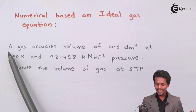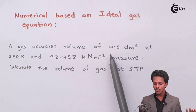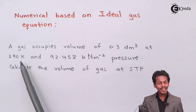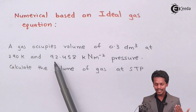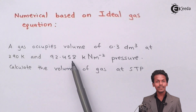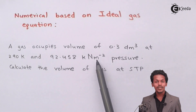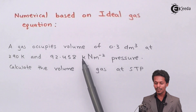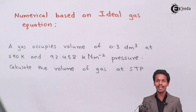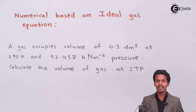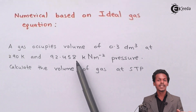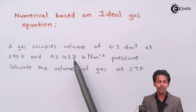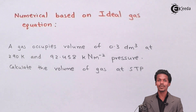It is given that a gas occupies a volume of 0.3 dm³ at 290 Kelvin, and the pressure is 92.458 kilo Newton per meter square. Note that the 'K' here is not related to Kelvin — pressure has its own unit. The small 'k' here stands for kilo. This is something we should be aware of while doing the numerical.